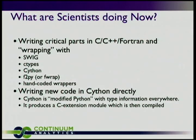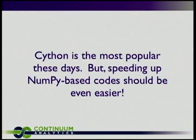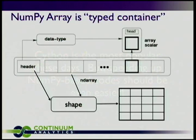More and more people are starting to write new code in Cython, which produces a C extension — it's decorated Python. You add little type decorations, change the Python syntax a bit, add type information to everything, and then it creates a compiled C extension module — much like NumPy itself. Cython is the most popular approach today, but speeding up NumPy-based code should be easier. There's so much type information available — we ought to be able to speed this up much more quickly.